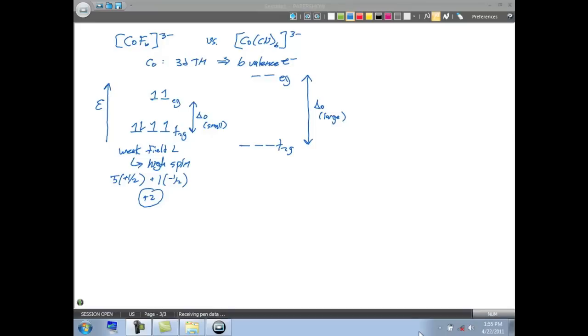Because of this, we fill in our first three out of the six electrons that we have to fill in here. And we fill the first three spin up in the T2G orbital.